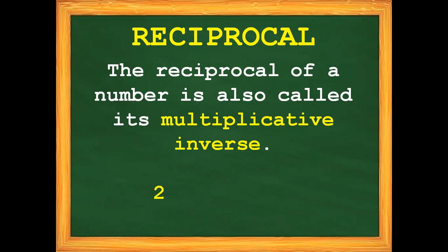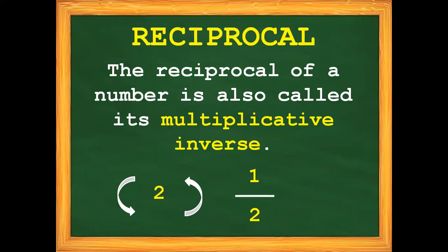Inverse means we need to flip — we need to change the position of a number. So in this case, whole number 2 is in the numerator's place, so we will put 2 in the denominator's place. And the imaginary 1 will be put into the numerator's place. So the reciprocal of 2 is 1 half. Whole number 2 becomes the denominator, and the imaginary 1 becomes the numerator. So we have 1 half.